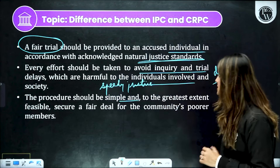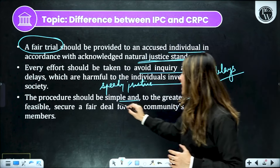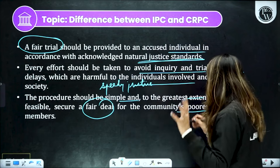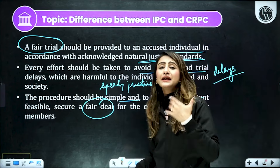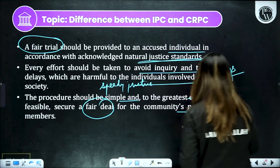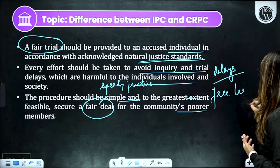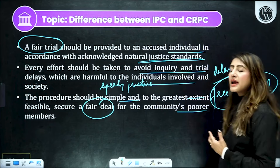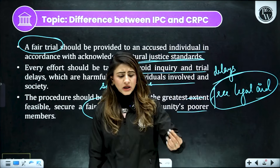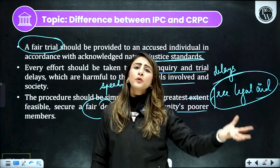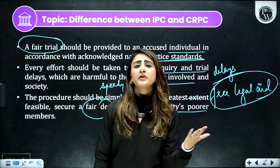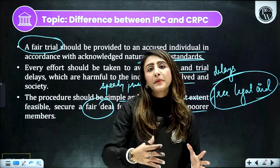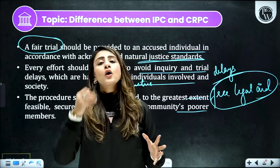Second — procedure should be simple, feasible, aur a fair deal honi chahiye for the community's poorer members also. Yahaan par agar koi accused poor hai, destitute hai, toh yahaan par law yeh bhi bolta hai ki unko free legal aid — matlab free legal help milti hai us accused ko. Kyunki har kisi ko apni baat kehne ka mauka milna chahiye court mein. For example, jo chori ka case chal raha hai woh kisi riksha puller par chal raha hai aur uske paas itne paise nahi hain ki woh ek advocate hire kar sake — toh us case mein usko free mein advocate provide kiya jaayega jo court mein uski taraf se baat karega.